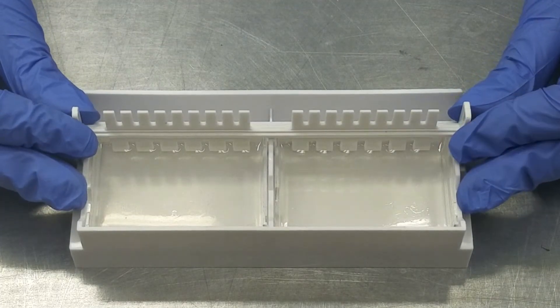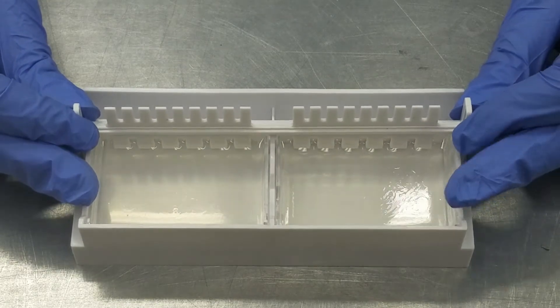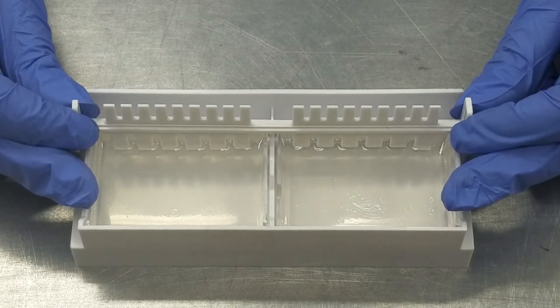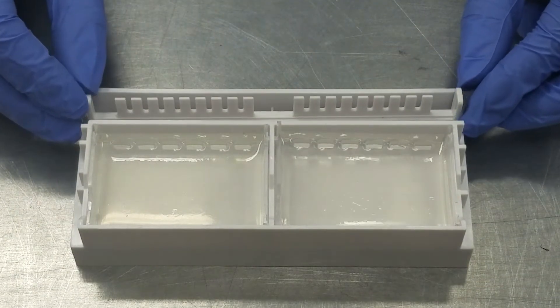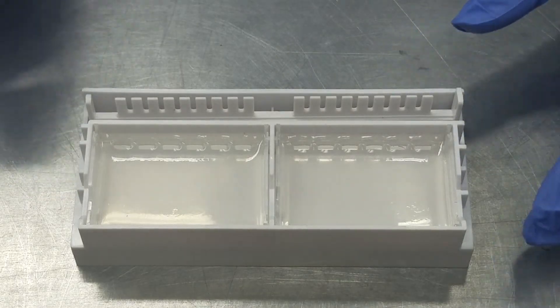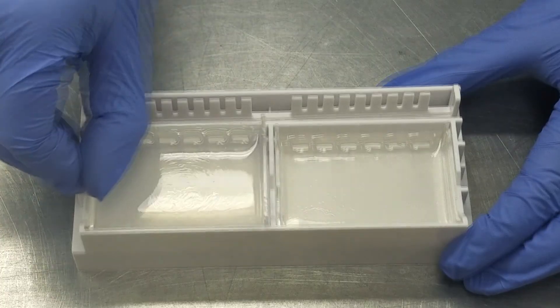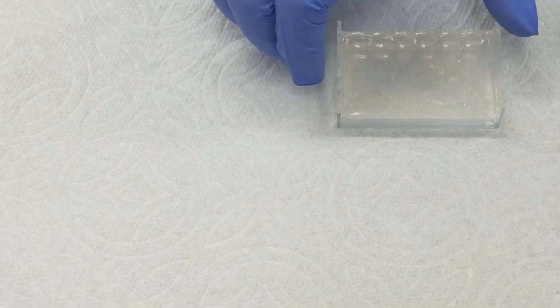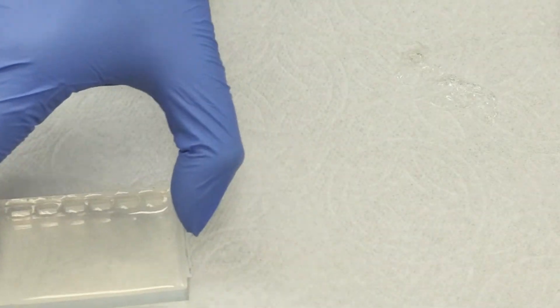Remove the gel comb by holding the casting stand down, wiggling the comb slightly while you do so. A suction may be pulled, so make sure you do this step slowly. To remove the casting tray from the stand, hold the side of the casting tray and pull up. Wipe the bottom of the gel casting tray on a paper towel to remove any excess agarose gel. Do not wipe the sides off.